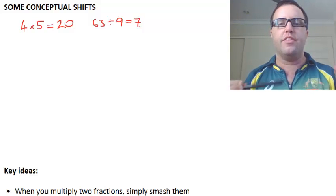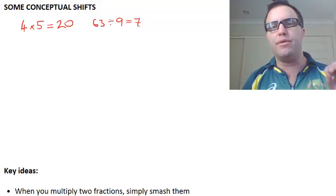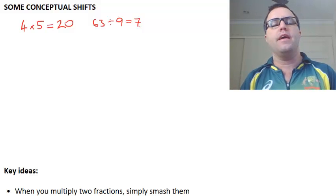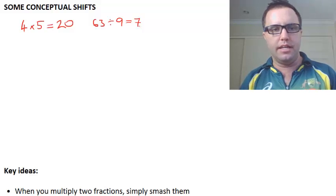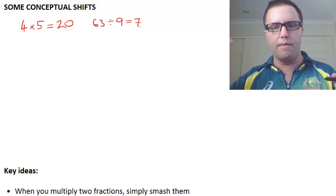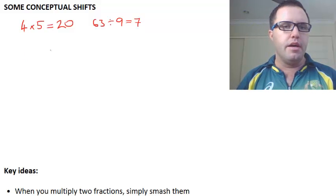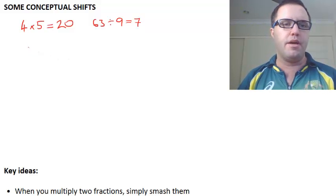However, things change when you're multiplying and dividing by numbers that are less than 1, so between 0 and 1. Like a 0 point such and such.